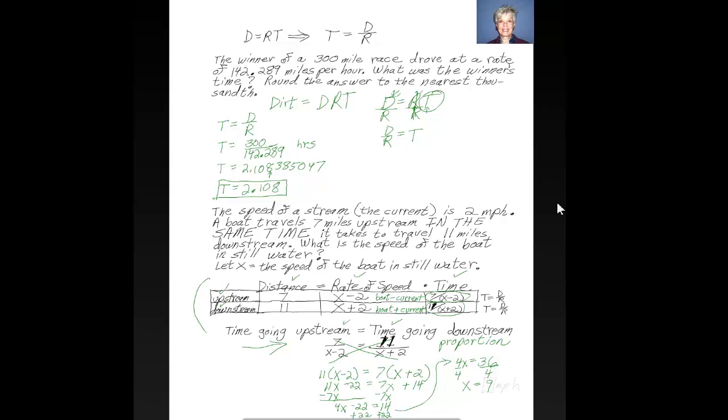And I'll get x equals 9. So our boat travels at 9 miles per hour, or is it kilometers per hour? Let's say miles per hour, MPH. The important thing here is the number 9, which is your answer. Okay. Talk to you later.